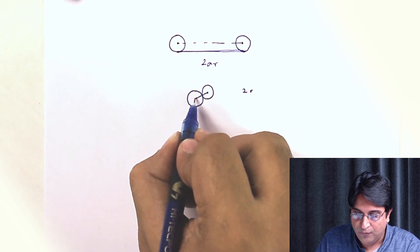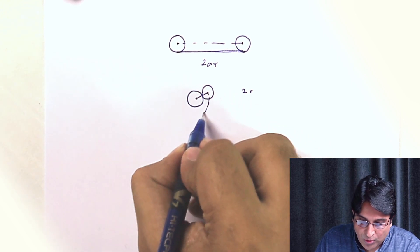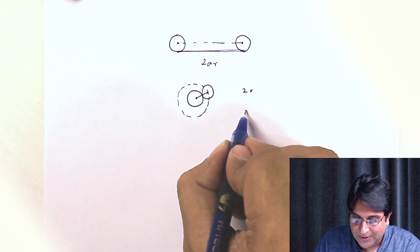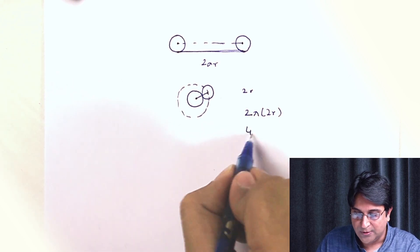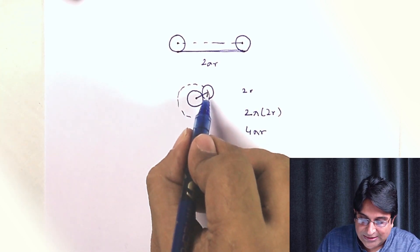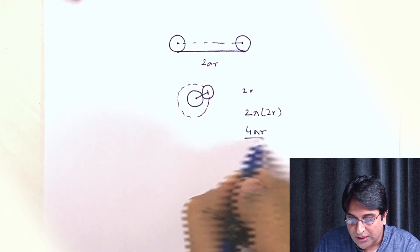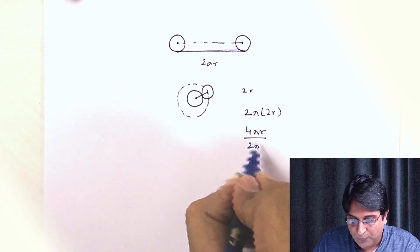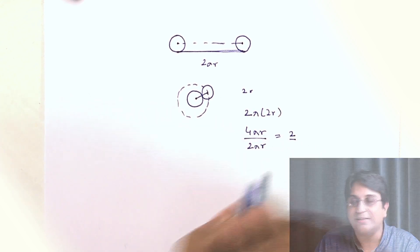So therefore, as it rotates, this is the path that the center takes, and this path is nothing but 2π times 2R. In other words, it's 4πR. So the distance that the center is traveling is 4πR, and therefore the number of rotations that the coin has to make to make the center go that much is 4πR divided by 2πR, which is two times.